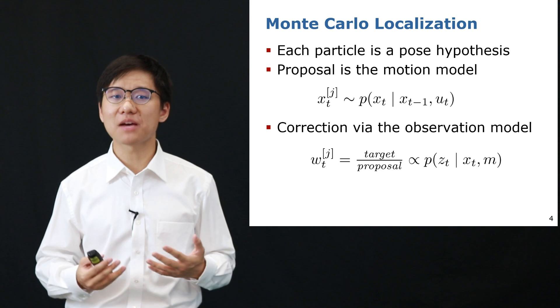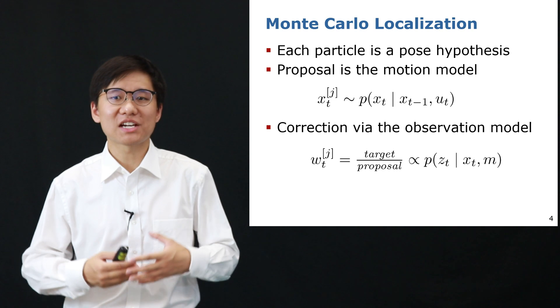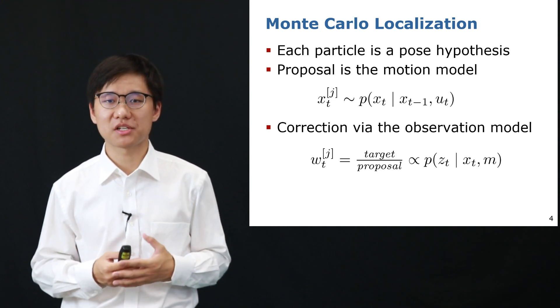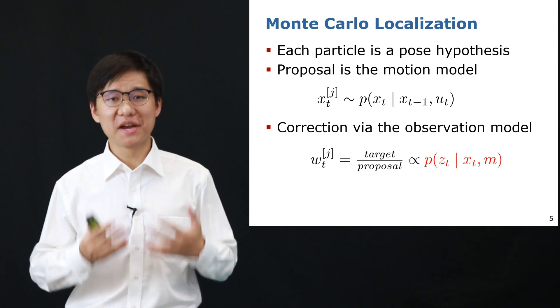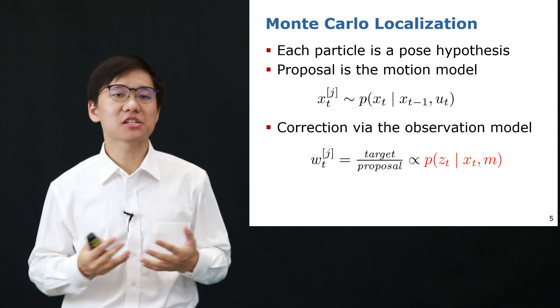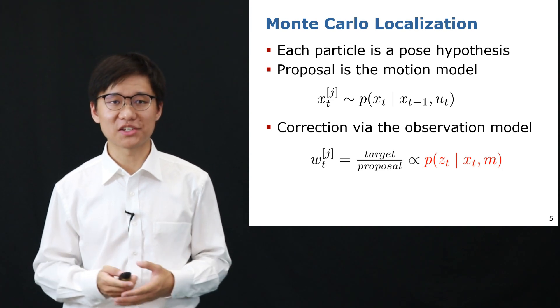The second step is the correction step with an observation model, which is the likelihood of the sensor observation given the pose hypothesis and the map. In this work we mainly focus on the observation model part, and we use the estimates of OverlapNet to build a learned observation model for Monte Carlo localization.